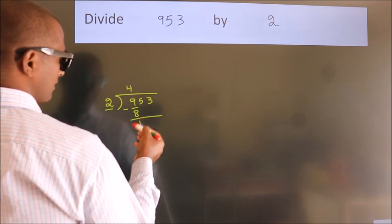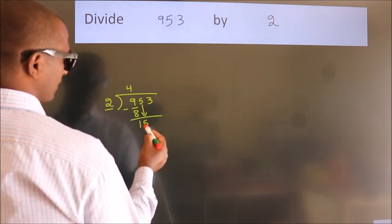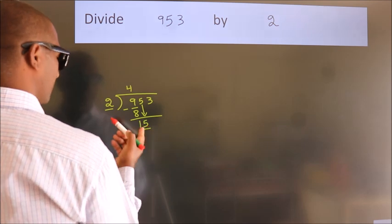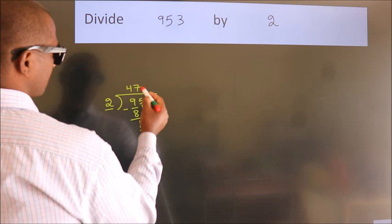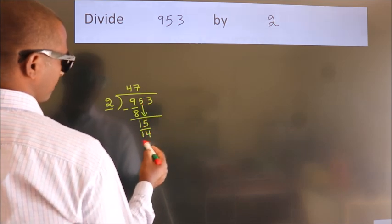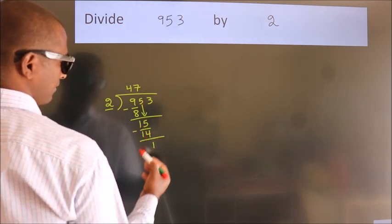After this, bring down the beside number. So, 5 down. So, 15. A number close to 15 in the 2 table is 2 times 7 equals 14. Now we subtract. We get 1.